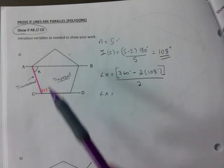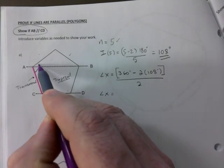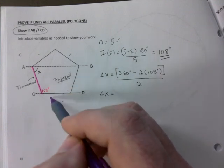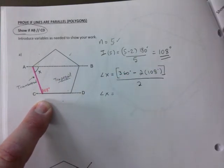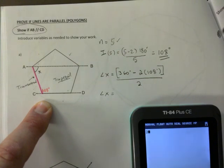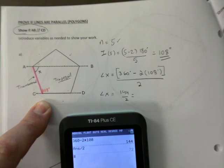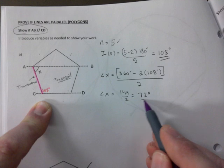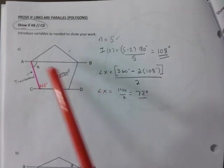So you do whatever you need to do to come up with angles. There's lots of ways to do it. Some of you are like, Mr. Dirksen, I'm seeing a triangle up here, couldn't I have found this one? Yes, you could. I don't think it's very helpful in this case to me to prove whether or not these lines are parallel. So here we go: 360 minus 2 times 108, that's 144 divided by 2, that's 72 degrees.